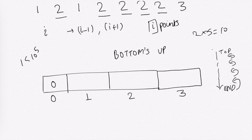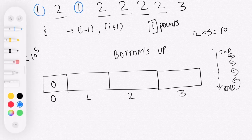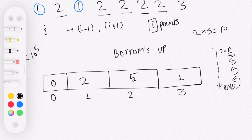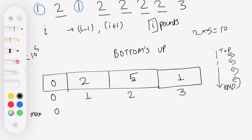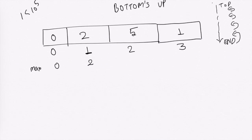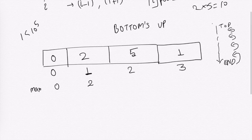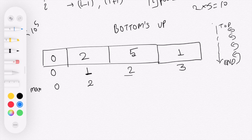How many elements of 1 are present? There are 2, so we write 2. How many elements of 2 are present? 5, so we write 5. How many elements of 3 are present? We write 3. The maximum value at index 0 is 0 since the range starts from 1. The maximum value if our array only has 1s is 2, because we have 2 ones, so the answer is 1 times 2.